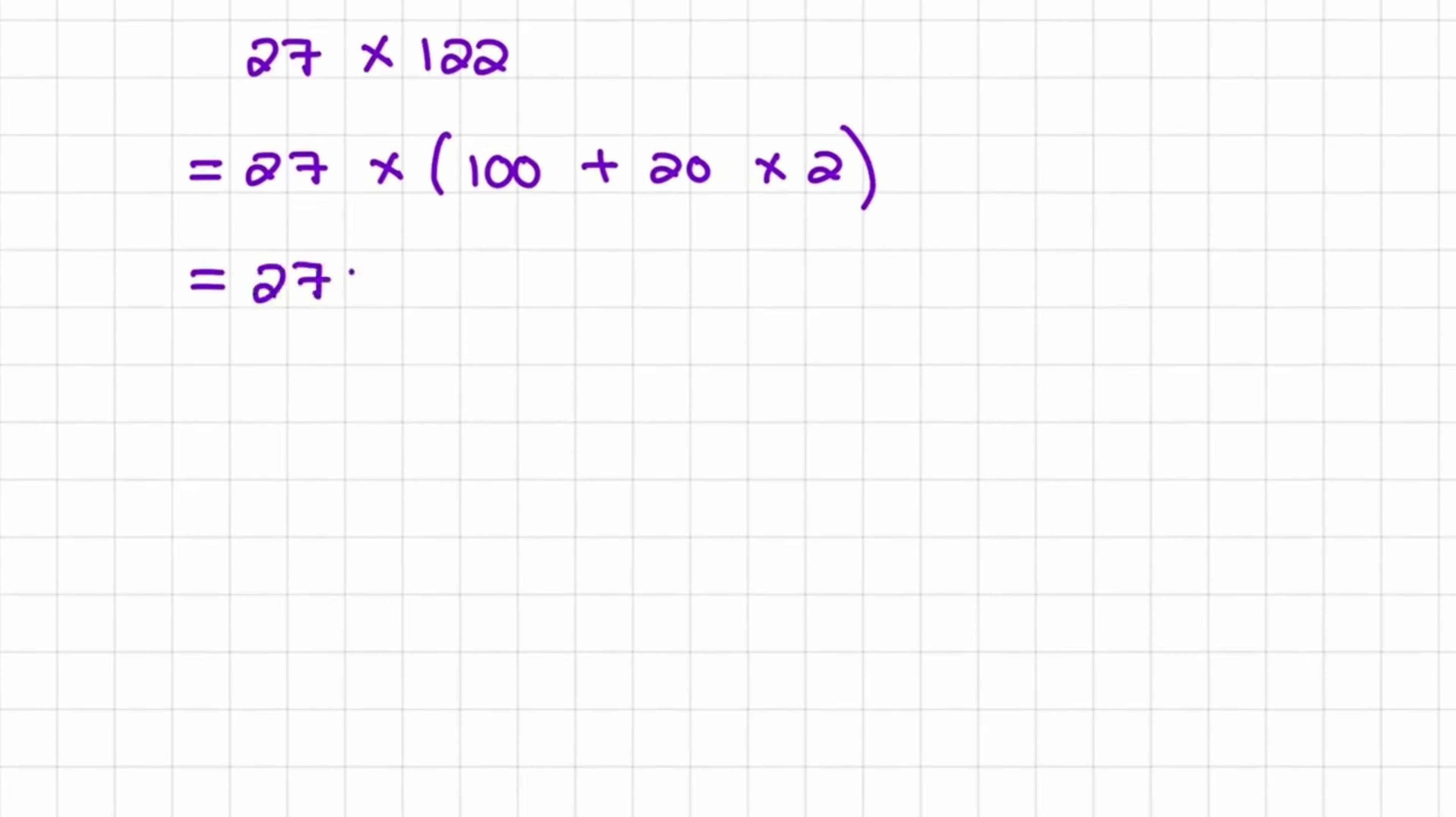This is the same as saying 27 multiplied with 100. So I distribute 27 to 100 and then add 27 multiplied with 20. And then lastly, I would add 27 multiplied with 2.